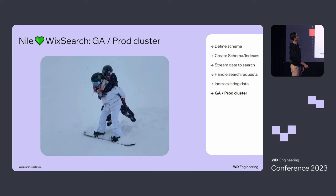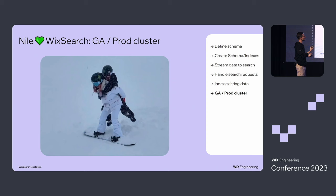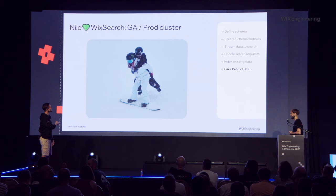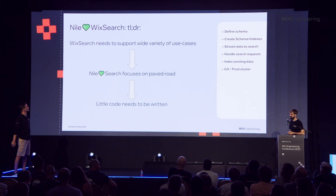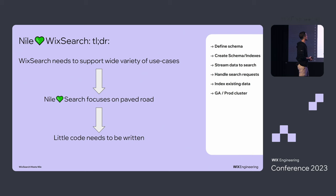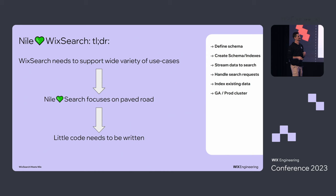Going to production: people will still need to talk to the Search team, because there are still questions of capacity planning, sizing, how much data there is, and what throughput you expect. We're not yet able to infer all that from the system automatically — maybe someday. TLDR: Wix Search needs to support a wide variety of cases so code needs to be written. In Nile, we focus on the paved road, so little to no code really needs to be written.